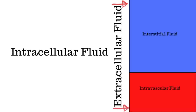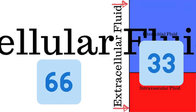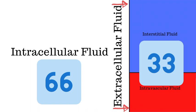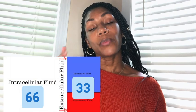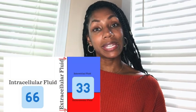Total body water is comprised of the intracellular fluid space (ICF) and the extracellular fluid space (ECF) — those are the two main categories. Of that 60% total body water, the ICF accounts for two-thirds, or roughly 66%. As you can imagine, we have an enormous number of cells in our body and they all need water, so 66% of total body water is ICF.